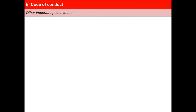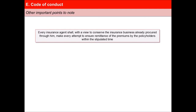Other important points that an agent should observe: Every insurance agent shall, with a view to conserve the insurance business already procured through him, make every attempt to ensure remittance of the premiums by the policyholders within the stipulated time by giving notice to the policyholder orally and in writing.